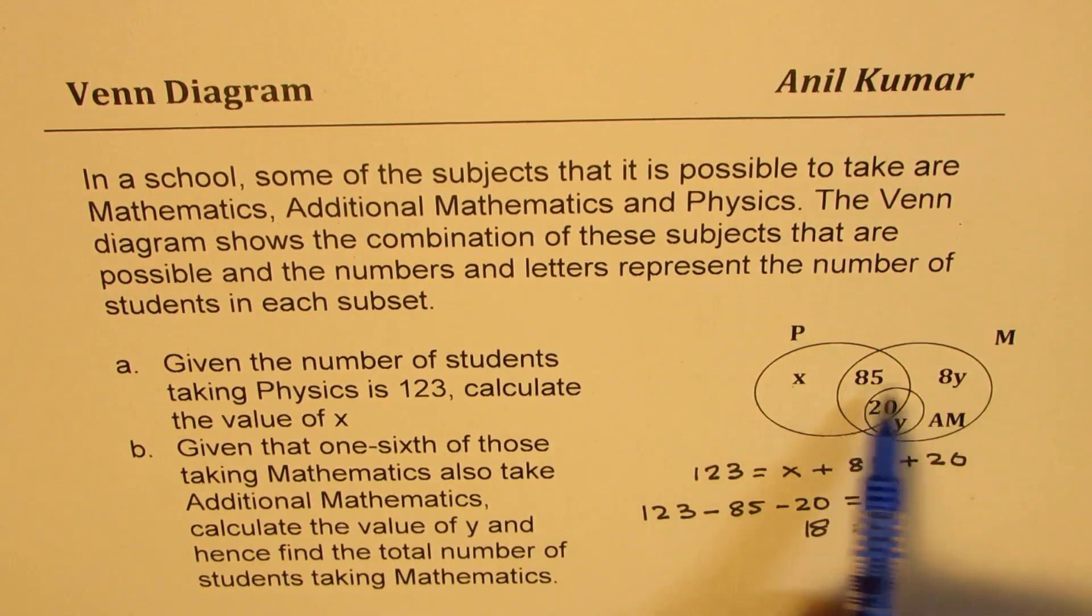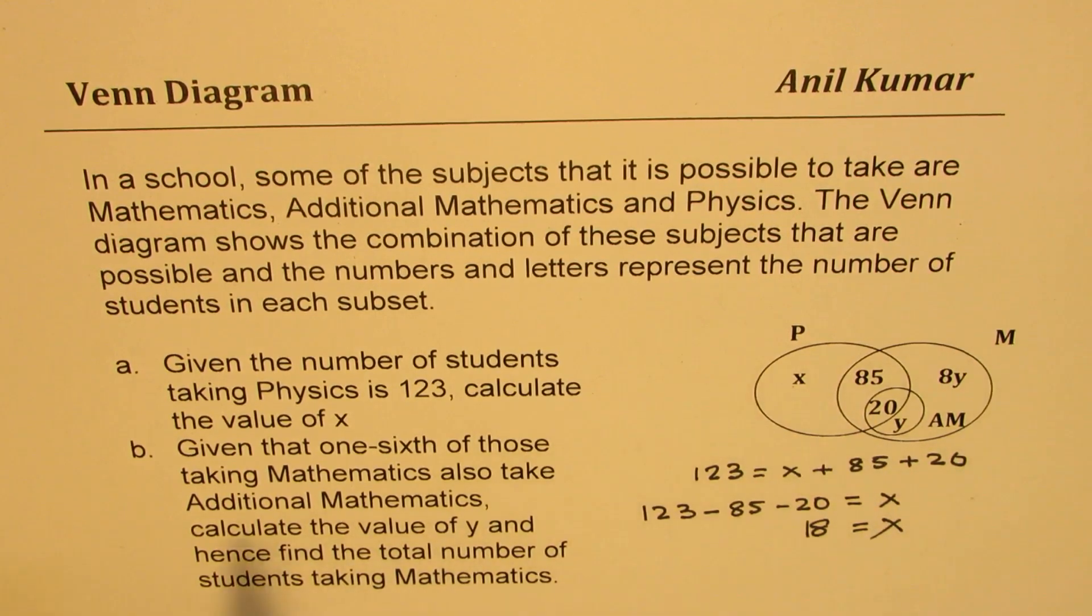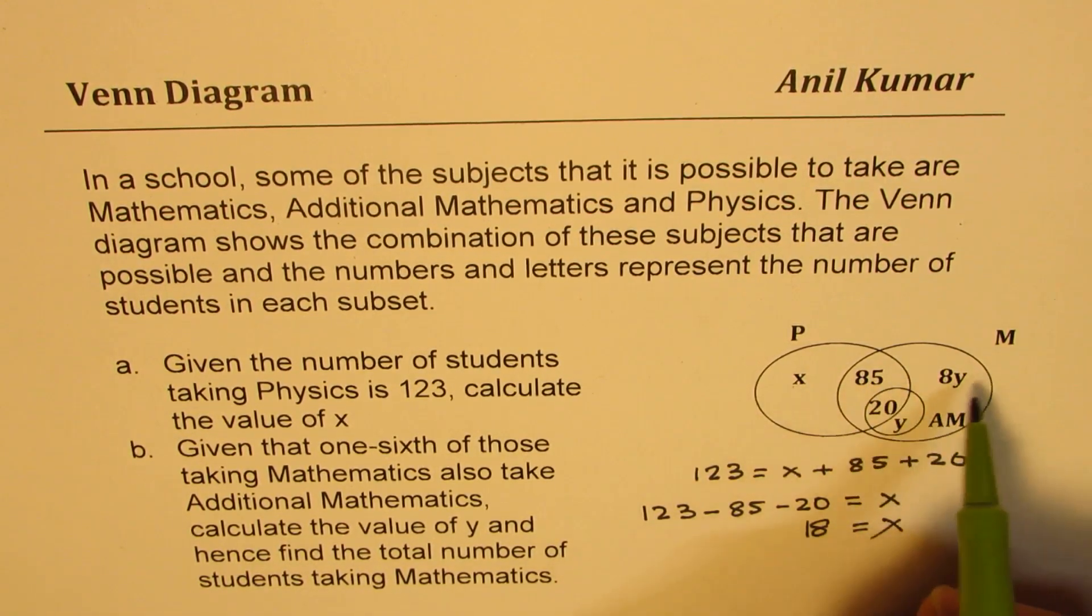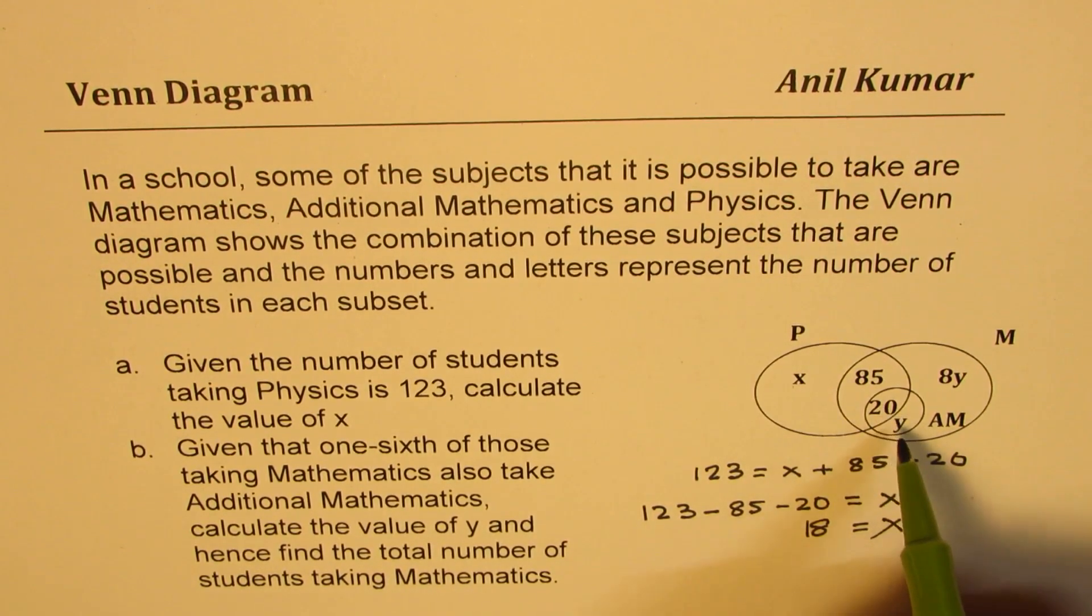That you need to figure out. So clearly, the number is 85 plus 8y, right? So this number here is, so mathematics is all of them, of course, but the students who have taken additional mathematics is 20 plus y, right?